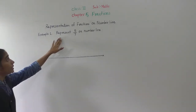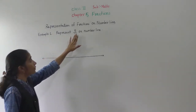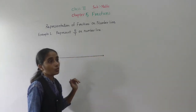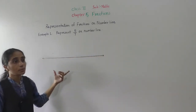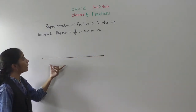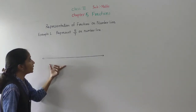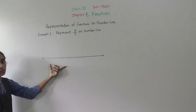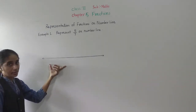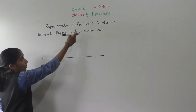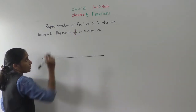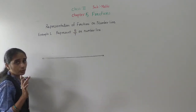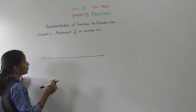Now, Example 1: represent 5 upon 7 on a number line. What we have to represent on a number line? 5 upon 7 we are going to represent on a number line.